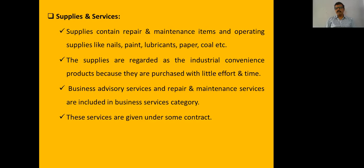Examples of supplies used in the production process include paints, lubricants, paper, coal, oil, diesel, petrol, and kerosene.